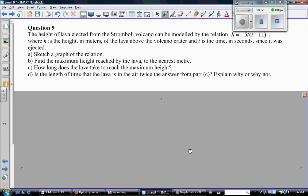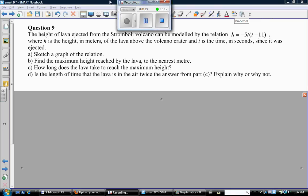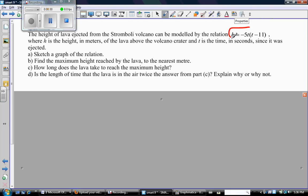This video is for grade 10 students working on their summative questions. It's the first section in the quadratic relations part, labeled question number nine. The height of lava ejected from the Stromboli volcano can be modeled by this equation, where h is height in meters of lava above the volcano crater, and t is the time in seconds since it was ejected.